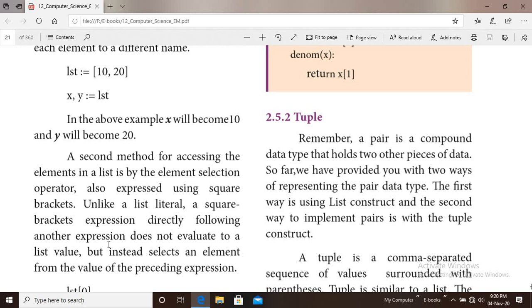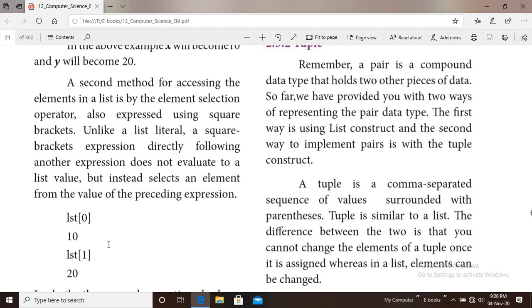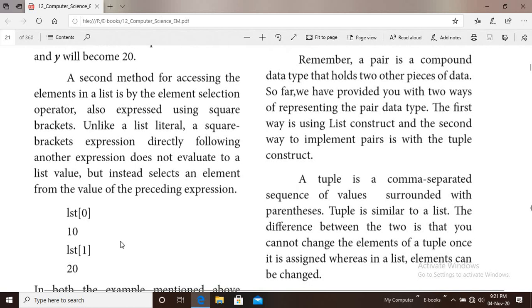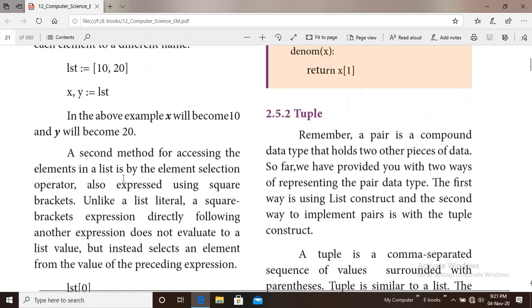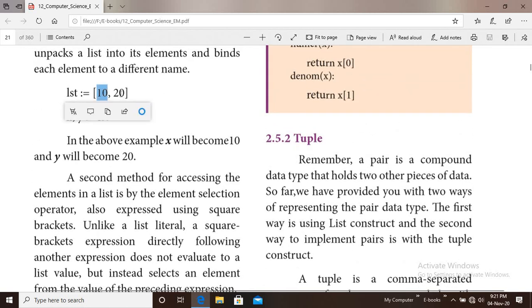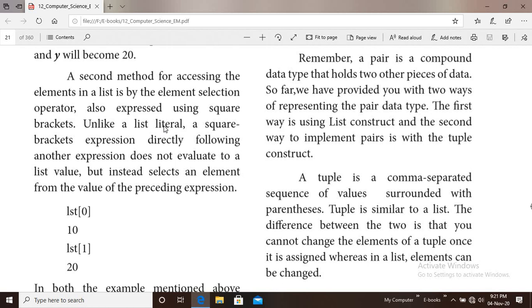A second method for accessing the elements in a list is by element selection operator, also expressed using square brackets. Unlike a list literal, a square bracket expression directly following another expression does not evaluate to a list value, but instead selects an element from the value of the preceding expression.